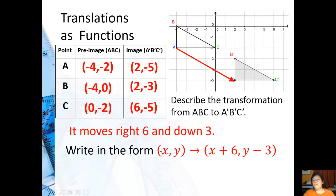In function form, it's (x, y) goes to (x plus 6, y minus 3), because that's to the right, and y minus 3, because I'm going down. So, if I go to the right, then it's plus the number. If I'm going to the left, it's minus. If I'm going up, it's plus for the y. And if I'm going down, it's minus for the y.